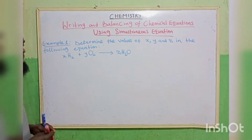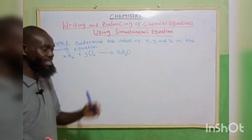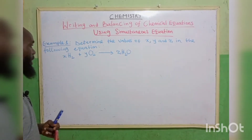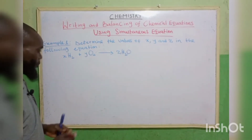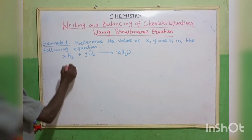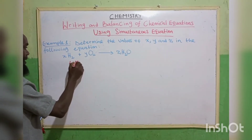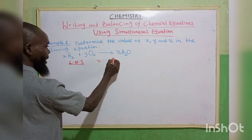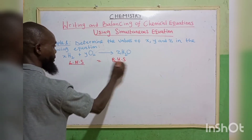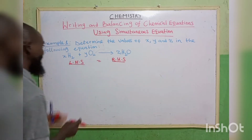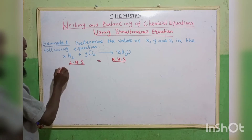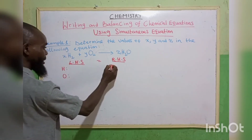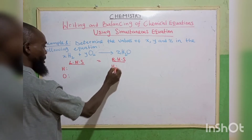Example one. Determine the values of X, Y, and Z in the following equation. We are going to say left hand side equals right hand side. The elements on the left hand side: we have hydrogen, then we have oxygen. Likewise on the right hand side: hydrogen and oxygen.